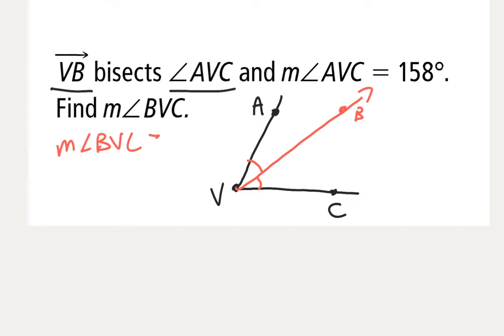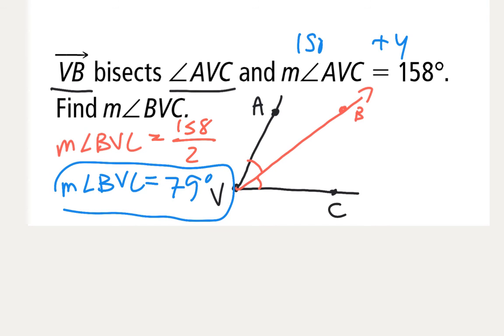So the measure of angle BVC, see 158 divided by 2. 150 divided by 2 would be 75, so 158 would be plus another 4, or 79 degrees. Alright, ta-da!